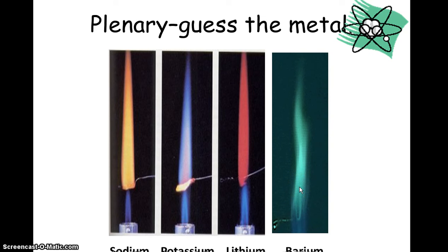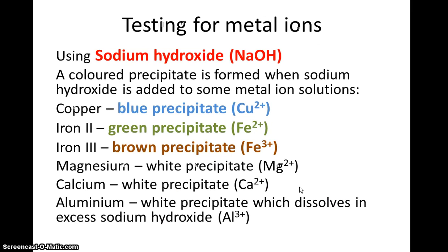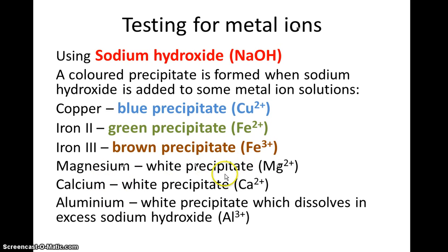Another way of testing for metal ions is using sodium hydroxide. All you do is add sodium hydroxide solution to the solution of the substance you're testing, and you get different coloured precipitates. Copper gives you a blue precipitate, iron(II) gives you a green precipitate, iron(III) gives you a brown precipitate, and magnesium, calcium, and aluminium all give you a white precipitate. However, if you carry on adding sodium hydroxide to excess, the precipitate with aluminium will disappear, which is how you distinguish aluminium.